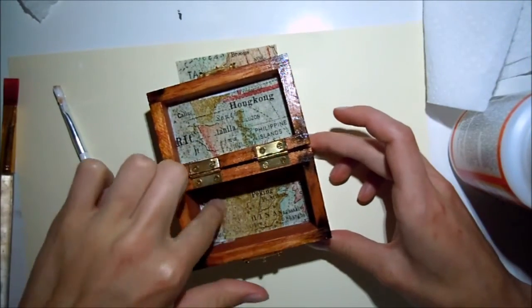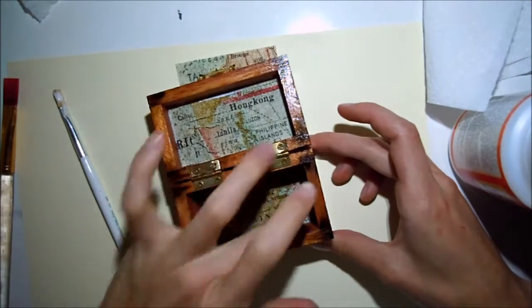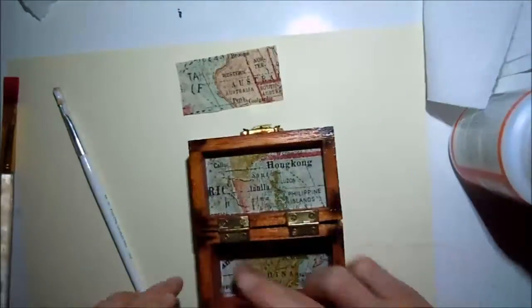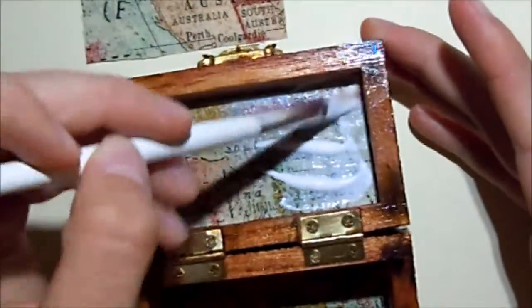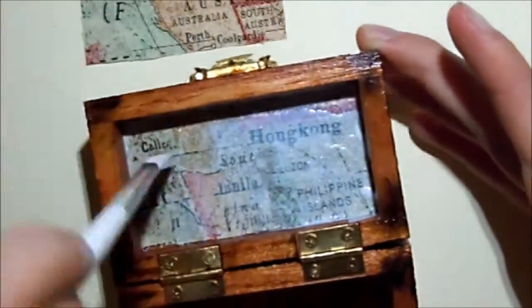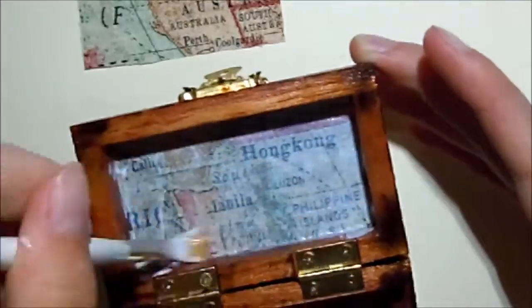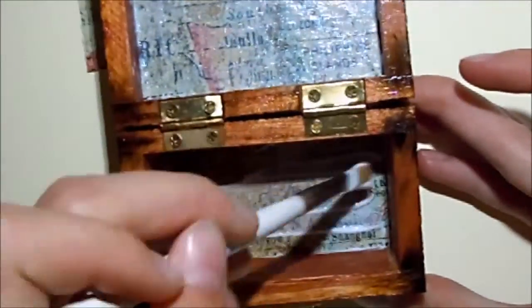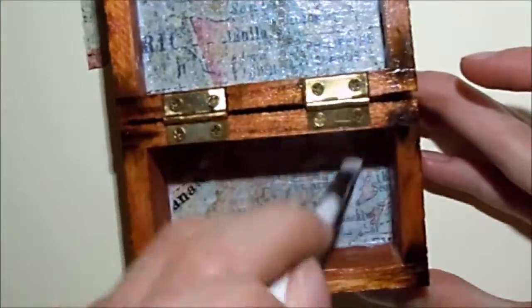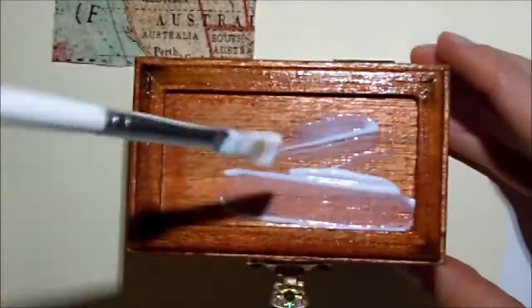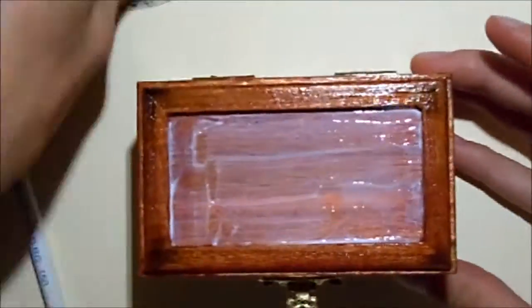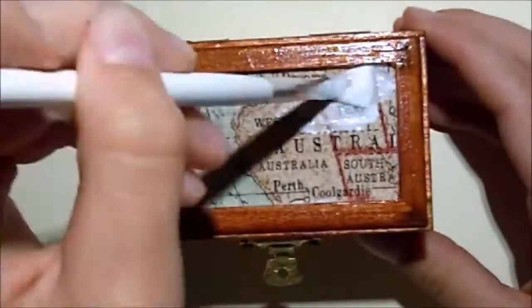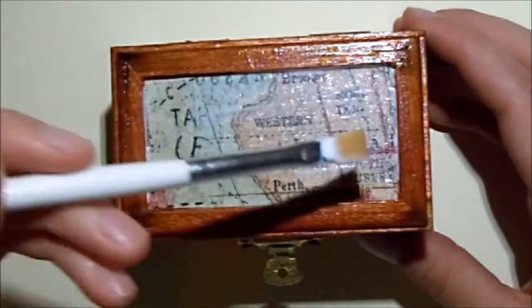This is Mod Podge again on top. It'll dry clear so no worries there. Mine will also have a glossy finish because that's the kind I buy, but if you don't like that you can buy matte Mod Podge. I use my fingers and the napkin to clean it up on the sides. The top will also have one. Australia is not the top of this box, guys. What a big place for such a little box.